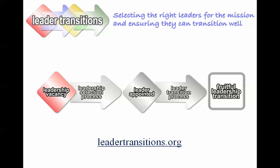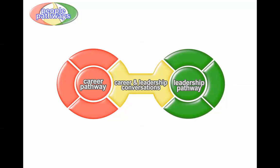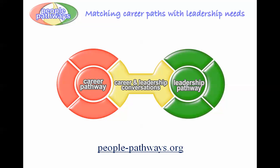The final toolkit we'll introduce is our newest one — it's the People Pathways Toolkit, which seeks to match the career path of the individual with the leadership needs of the organization. It consists of two pathways: the Career Pathway assists an individual in charting their career path within the organization, and the Leadership Pathway seeks to ensure a continual flow of leaders to meet the leadership needs of the organization. You will find it at people-pathways.org.